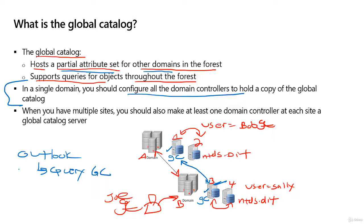With that said, if you have multiple domains in your forest, you can also make every domain controller a global catalog. We'll see when we install Active Directory that all domain controllers do default to be global catalog servers. If you are in an environment where you have multiple sites — as in physical locations — you should make at least one domain controller in each site a global catalog server. The advantage: if my domain here is in Vancouver and domain B is in New York City, if you do not have a global catalog server in the New York City domain, then every time your users query something through Outlook like an email address, that request has to go all the way back to Vancouver. So it would just be more efficient if you had a global catalog in each of these sites. At a minimum, one per site.